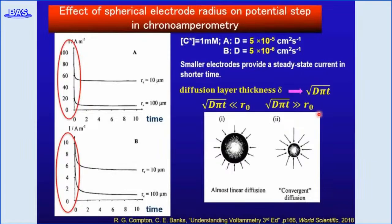Here is the chronoamperometric current-time response at two different electrode diameters and different diffusion constants. In general, for chronoamperometry with a larger electrode, the current goes to nearly zero, as shown for the 100 µm size electrode. On the other hand, for a smaller microelectrode, a steady-state current flows in a shorter time, as shown in this figure. The diffusion constant mainly affects the short time domain. This difference arises from the mass transfer to the spherical electrode.